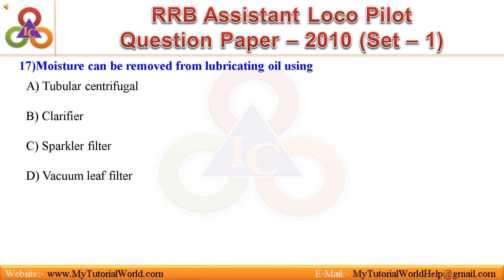Question 17: Moistening exhaust can be removed from lubricating oil using: A. Tubular centrifugal, B. Clarifier, C. Sparkler filter, D. Vacuum leaf filter. Answer is Tubular centrifugal.